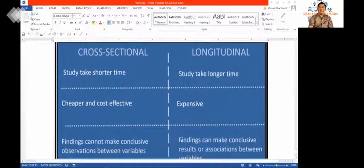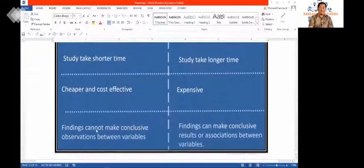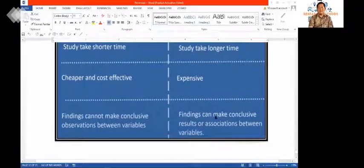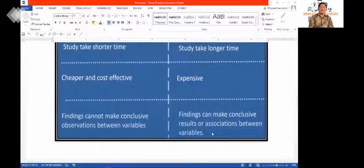Finally, cross-sectional study takes very short time and is cheaper and cost effective, more efficient in relation to time and analysis. Findings cannot make conclusive observations between variables. On the other hand, longitudinal study takes a long time, is expensive, and findings can make conclusive results or associations between variables.